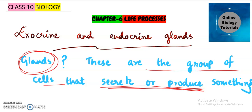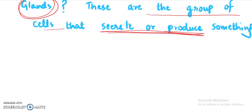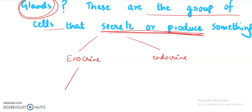Glands can be of two types: they can either be exocrine or they could be endocrine. Exocrine glands are the group of cells that secrete or pour their secretion into a tube, which is known as a duct. So exocrine glands will always bring their secretion into a duct. For example, saliva reaches our mouth because it is produced by salivary glands and this saliva reaches our mouth through a duct.